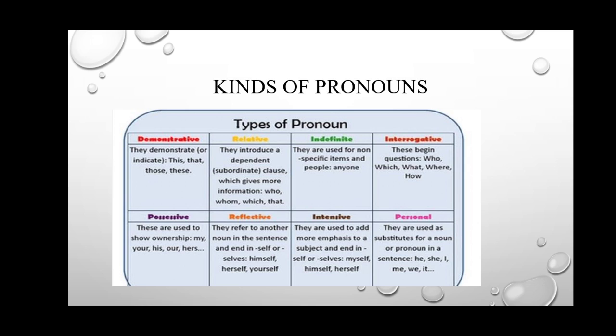Interrogative pronouns are used when we start questions — who, which, what, where, how. Possessive pronouns are used to show ownership — my, your, his. For example, 'This is your lunch' — here 'your' tells us that the lunch belongs to you, so 'your' is a possessive pronoun.